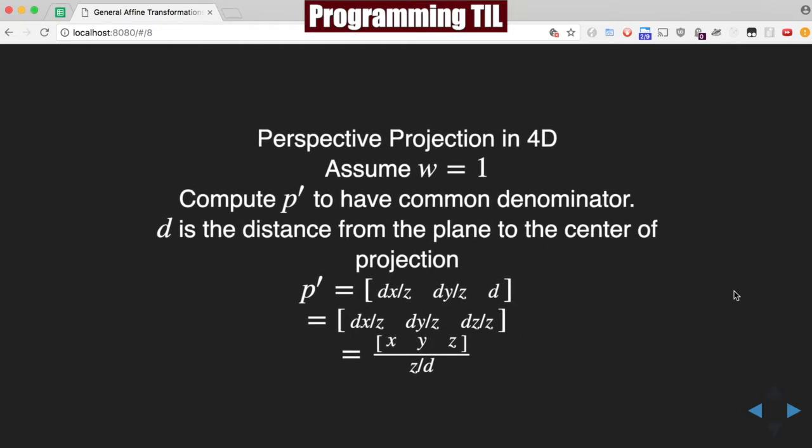So we need to compute a 4x4 matrix to do this. What we're going to do is compute P prime. P is a point, and then P prime is the new point to determine the location. And we need a common denominator. We're going to assume that W is 1. And D is the distance from the plane to the center of projection. So we have point x, y, and z normally here. And then P prime is going to be change of x over z, change of y over z, and then the D. We're going to convert the D to be dz over z. So that way we can derive this formula and have this z, D as a common denominator across the way.